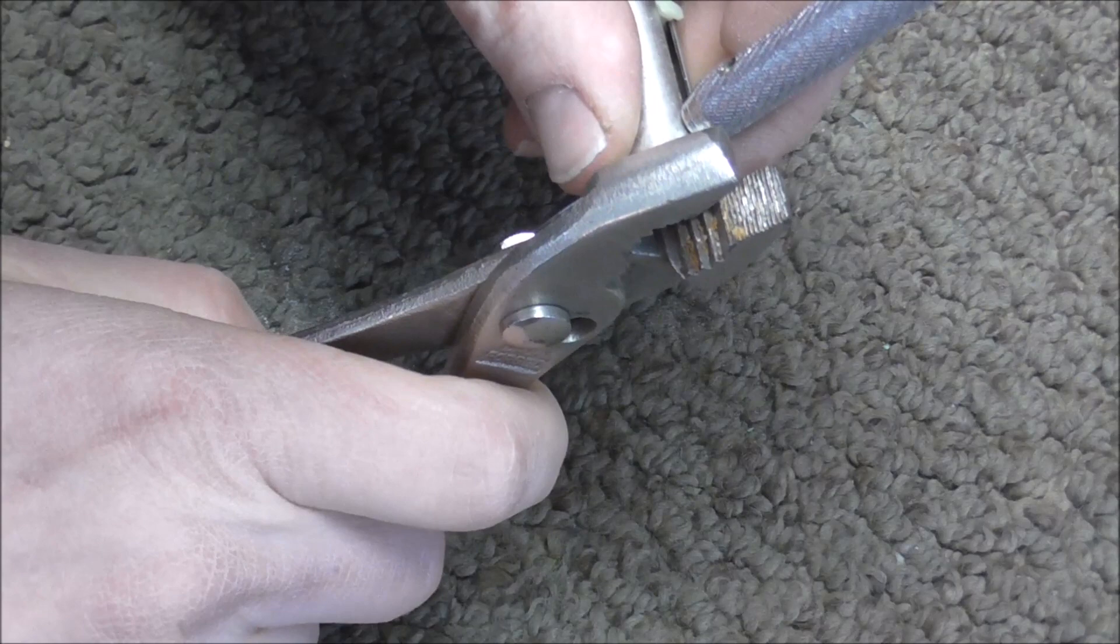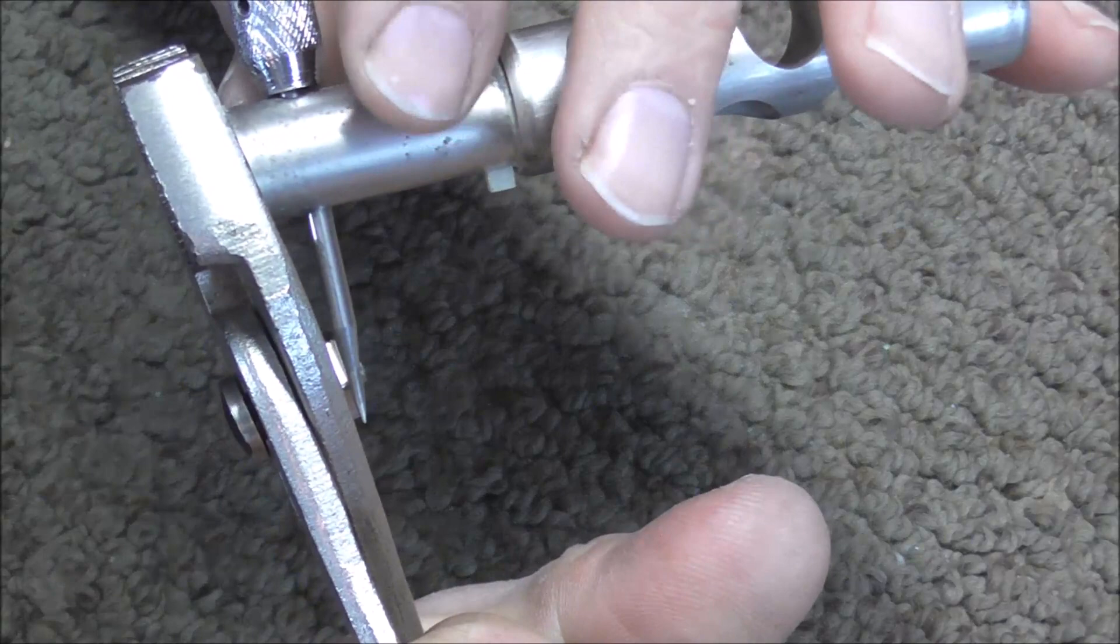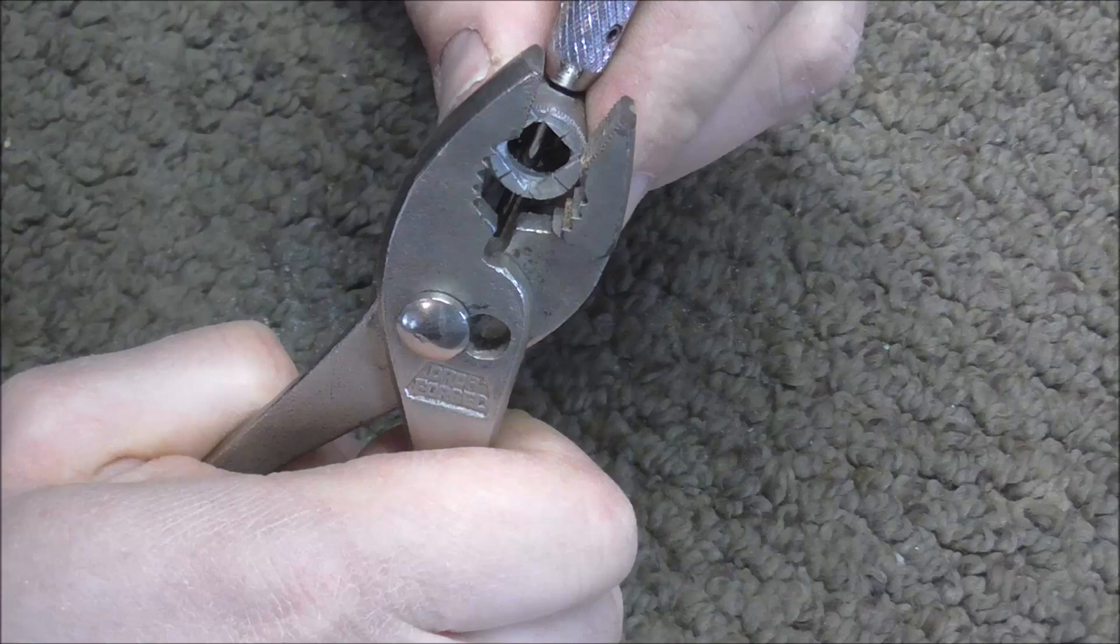So I'm going to take the pliers and I'm going to grab on only the valve stem portion of it on both sides and I'm going to be very careful to avoid the valve. And after I get that done I'm going to squeeze and try to break off some more of those parts.